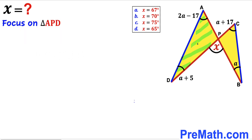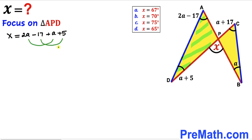We are going to apply this concept on both of these triangles. Focusing on triangle A, P, D: this angle is our exterior angle whereas these two angles are our opposite interior angles. So the exterior angle x is going to be equal to the sum of the two opposite interior angles: 2a minus 17 plus a plus 5. Combining like terms, x equals 3a minus 12. I'm going to label this as equation number one.